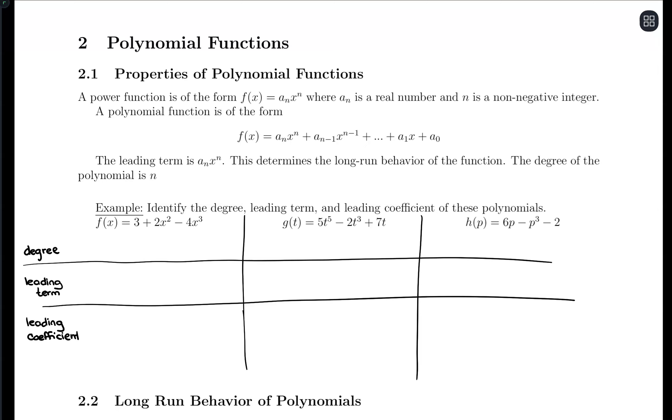The degree is basically the largest exponent. The leading term is the entire term—the number and variable portion where we get the degree from. The leading coefficient is the numerical part that's multiplying as part of that leading term.